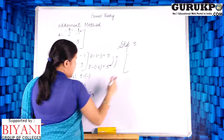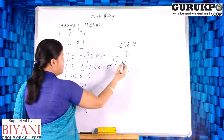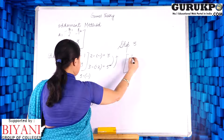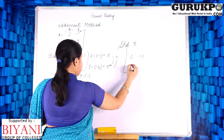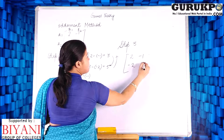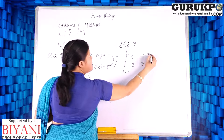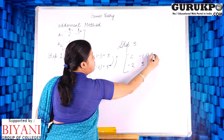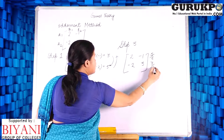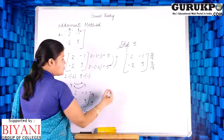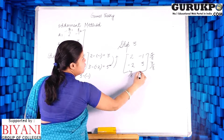The third step is to add these values and put the sum below each value. This gives us 5 upon 8 and 3 upon 8, and 4 upon 8 and 4 upon 8.